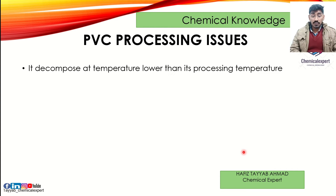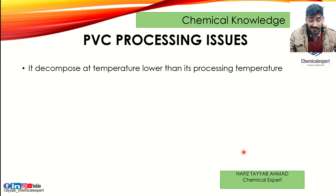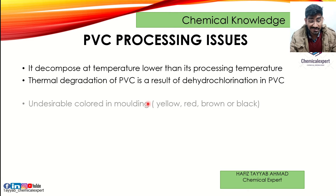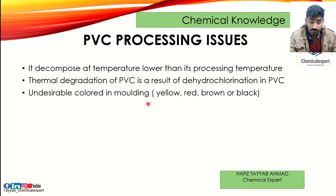PVC has some processing difficulties. First, polyvinyl chloride breaks down its monomer chain and decomposes when heated, because the chain breaks down before the processing temperature is reached. This is problematic. The thermal degradation of PVC is a result of dehydrochlorination — HCl is released in the process, which is dangerous. Also, when the chain breaks down, the color of the PVC becomes yellowish, reddish, sometimes brown, and black spots may occur.